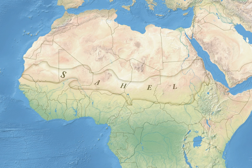The Sahel spans 5,400 kilometres from the Atlantic Ocean in the west to the Red Sea in the east, in a belt that varies from several hundred to a thousand kilometres in width, covering an area of 3,053,200 square kilometres.